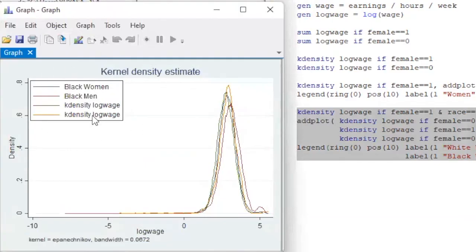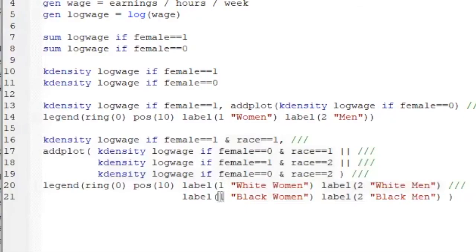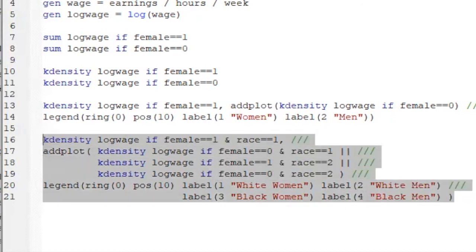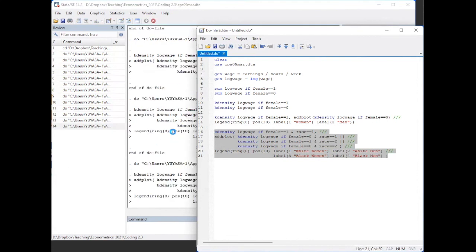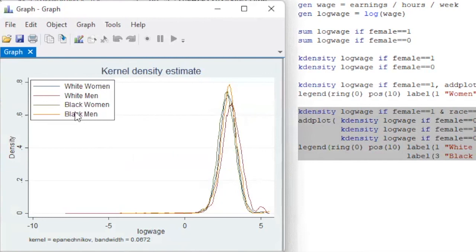Something is wrong with the legend. My code should be wrong. Ah, we need to give the correct line indices. Now it displays the four density plots with the correct legend.